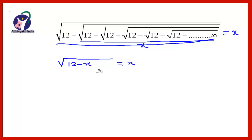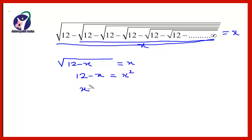To remove the root sign, we will take the square of both sides. Squaring both sides, we get 12 minus x is equal to x squared. And so this can be written as x squared plus x minus 12 equals 0.